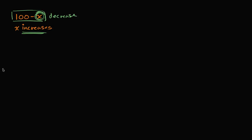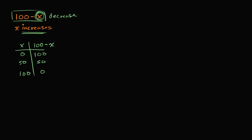If you want to make it a bit more concrete, you can try out some values in a table. So: x and then what is 100 minus x? When x is 0, 100 minus x is 100. When x is 50, it's 50. When x is 100, it's 0. So it's pretty clear that as x is increasing, 100 minus x is decreasing.